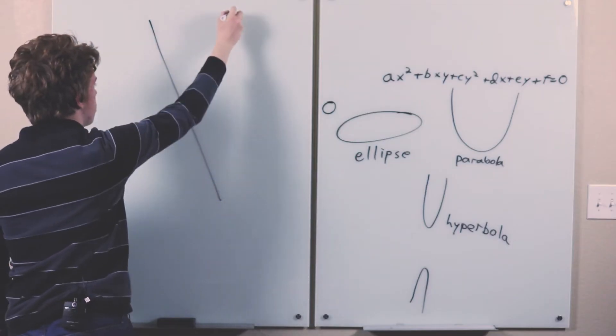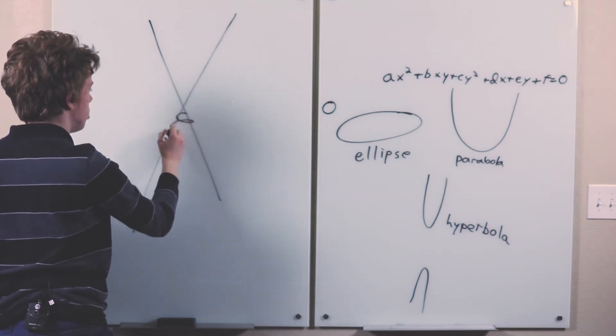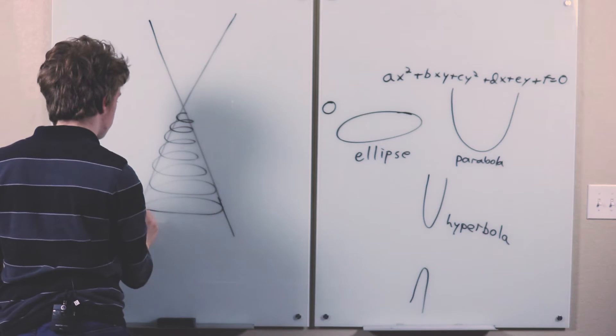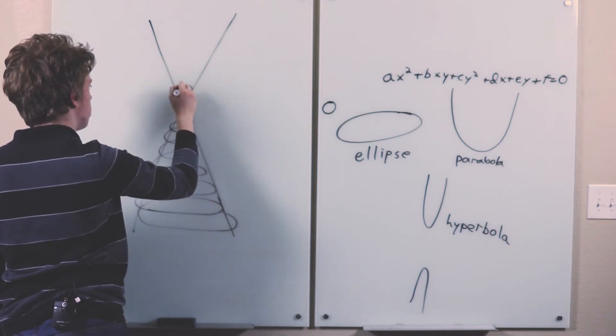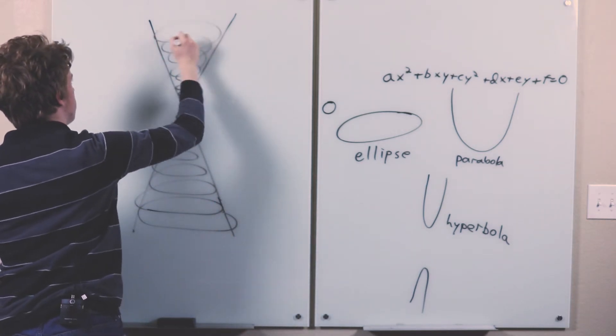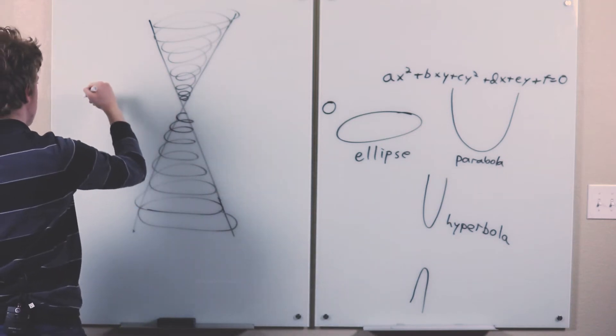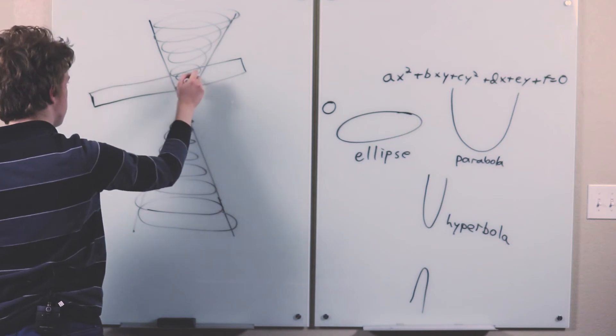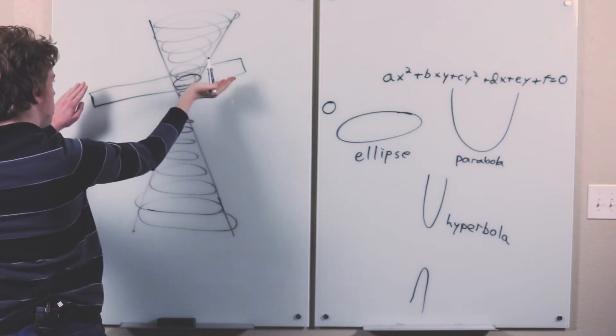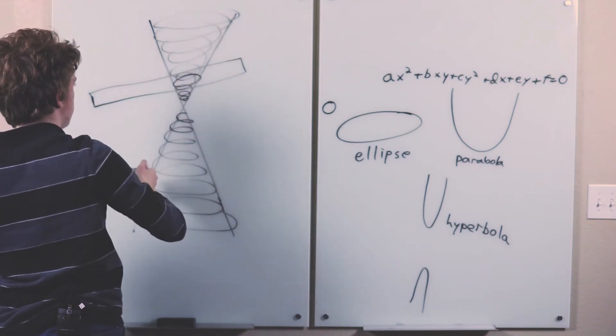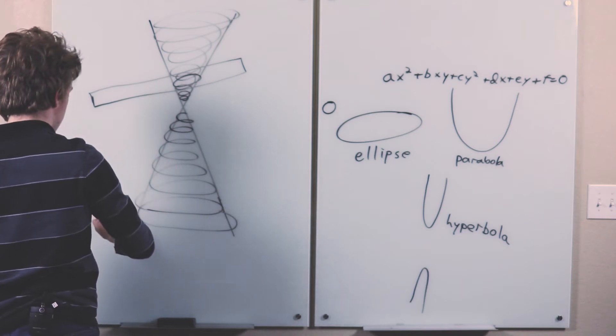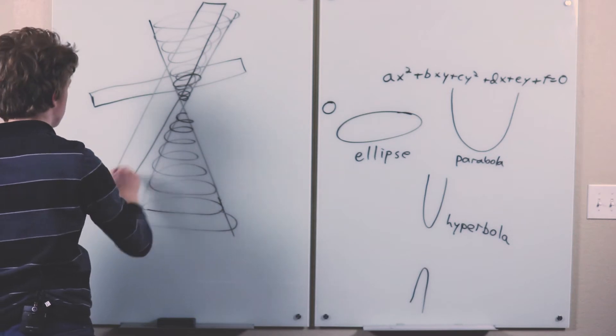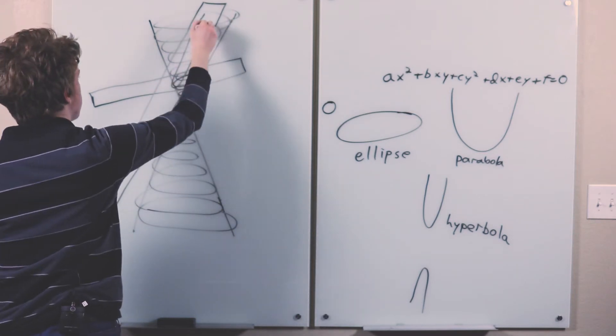So if you take this cone going off to infinity in both directions. And you take it with a plane, you can get an ellipse like this. Or if you tilt it until it's parallel with this, you can get a parabola, like that.